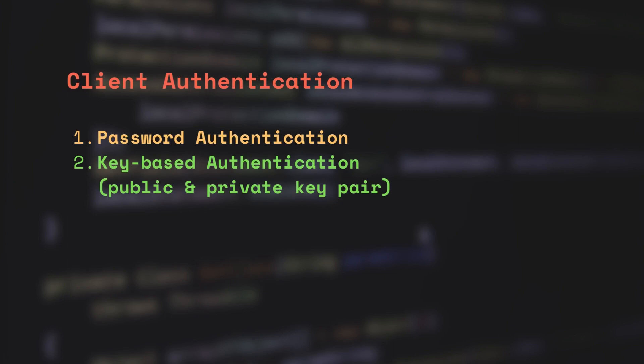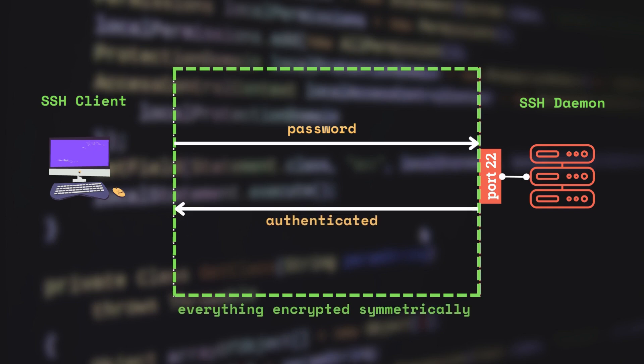So, it might be wise to disable password authentication altogether from the server. However, all messages, including the password, will be sent encrypted even if you use password authentication instead of SSH keys. There is a common misconception that SSH uses the pair of public and private keys for encrypting the messages between the client and the server, but that's not true. The SSH key pair is only used during authentication, not for encrypting the messages — it's done using the symmetric key.